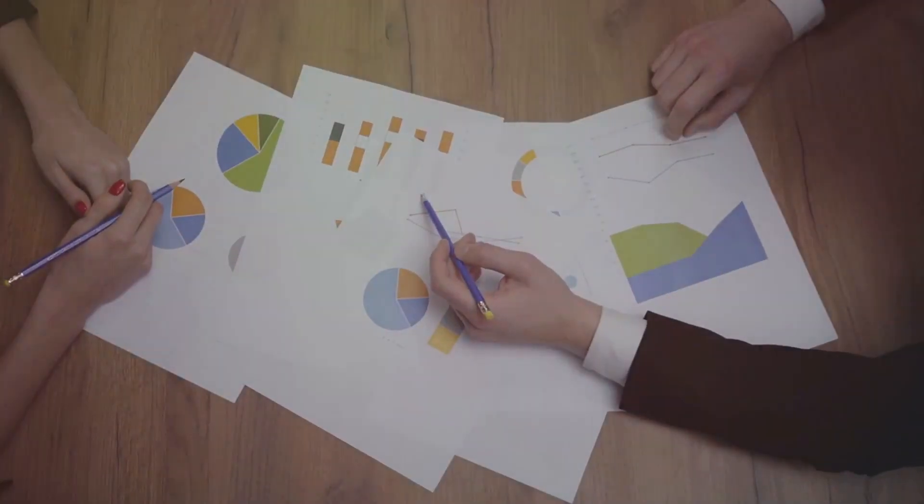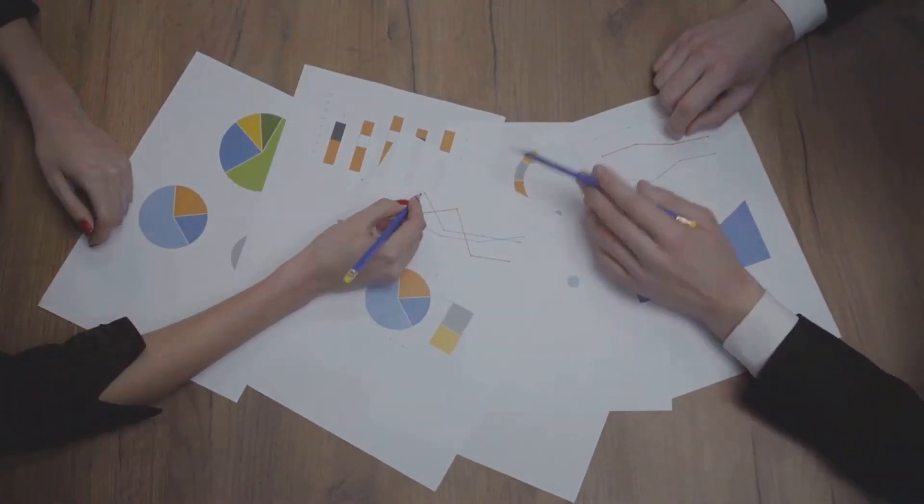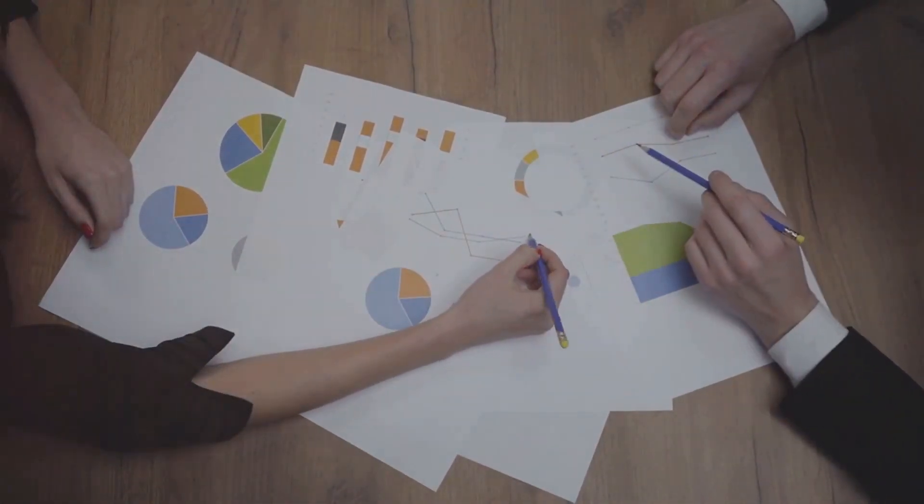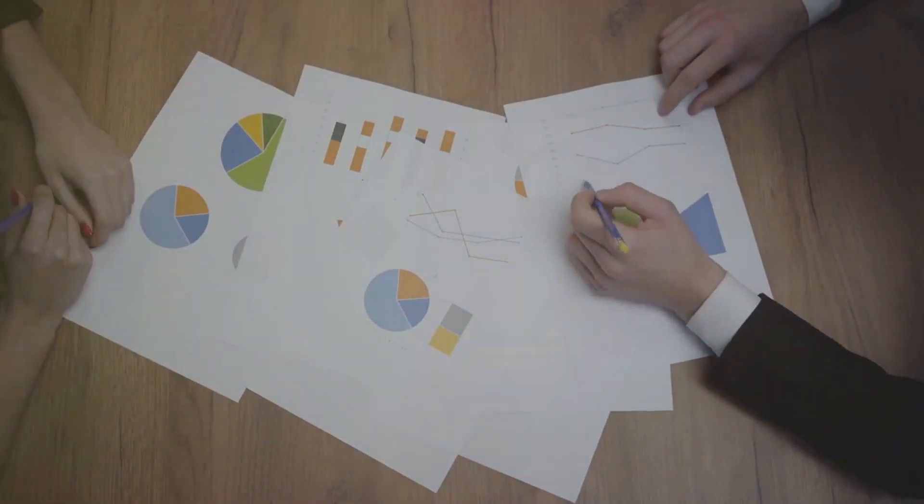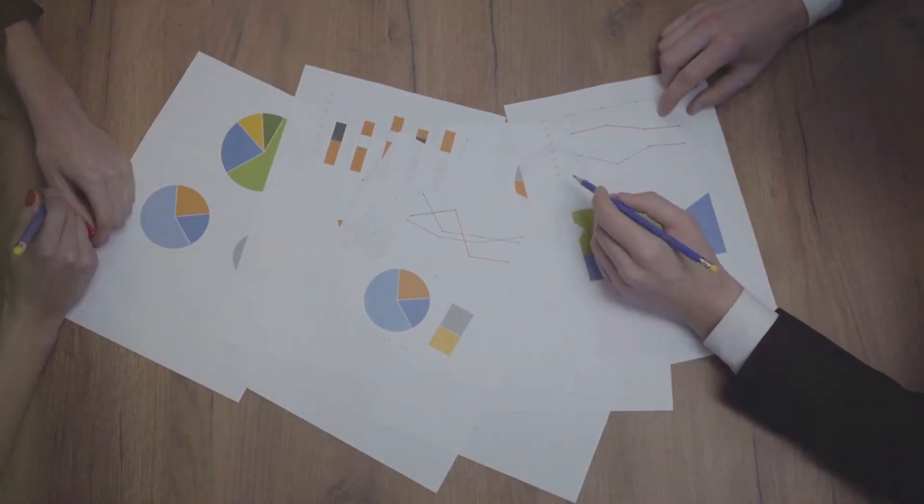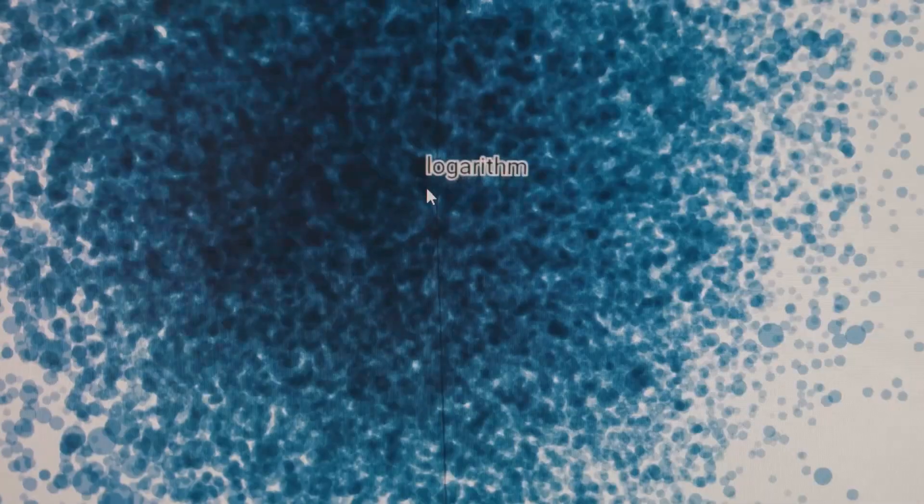Next, we have pie charts. This technique is like the dessert of data visualization – sweet and simple. Pie charts are used to display the proportional allocation among categories. However, while they may look like a tasty treat, they can be less effective when there are too many slices or if the values are similar.